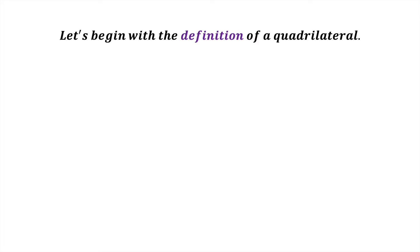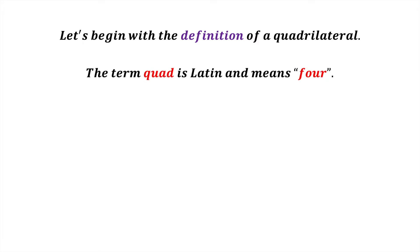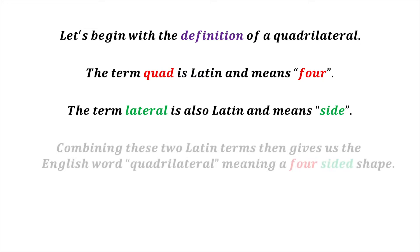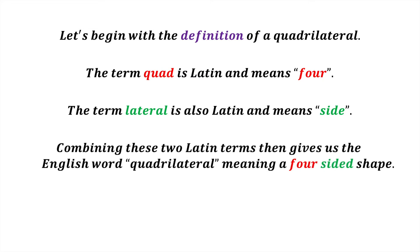Let's begin with a definition of a quadrilateral. The term 'quad' is Latin and means four. The term 'lateral' is also Latin and means side. Combining these two Latin terms together gives us the English word quadrilateral, meaning a four-sided shape.